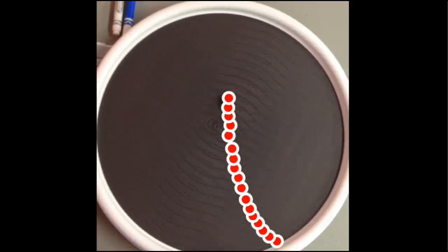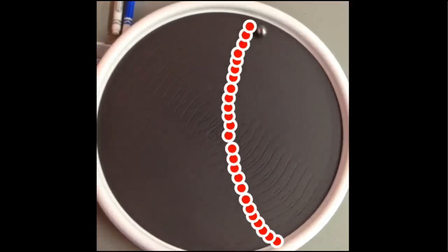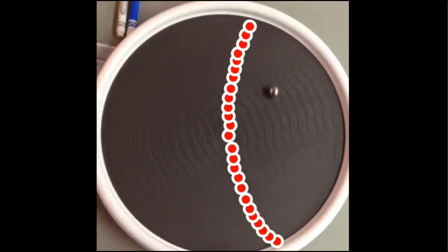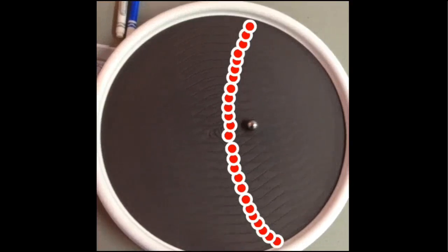Once we add the line you can clearly see the Coriolis effect. The spinning of the Lazy Susan took the straight line and turned it into a curved line.